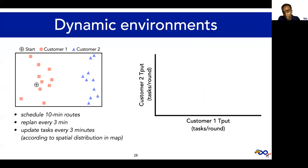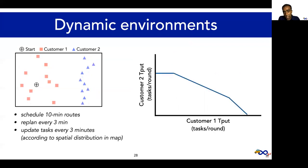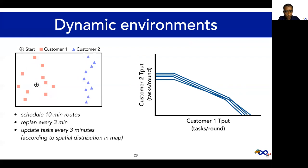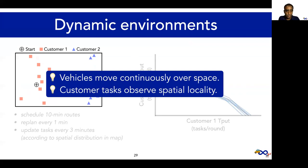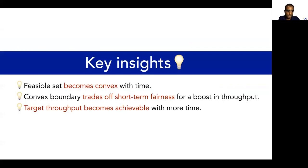Let's consider a modified example where tasks are generated randomly every three minutes according to the distribution shown in this map. We want 10-minute routes that aren't round-trips this time, and we'll replan every three minutes to incorporate any new tasks that have arrived. Looking at the convex boundaries at each three-minute replanning interval, notice that they hover around a fairly narrow band, indicating that we can still track the target throughput reliably. This holds because vehicles move continuously over space and customer tasks tend to observe some consistent spatial locality. To recap, there are three key insights in designing Mobius: first, it's a safe bet to expect the feasible set to become convex with time; second, the convex boundary trades off short-term fairness for a boost in throughput; and third, we can achieve the target throughput over time by operating at different schedules on the convex boundary.